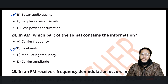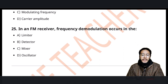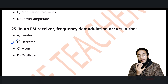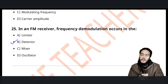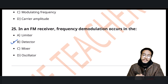In AM, which part of the signal contains the information? The side bands contain the information. Carrier frequency is the frequency of the wave that carries the message signal. Modulating frequency is the frequency of the message signal itself. Carrier amplitude is the amplitude of the wave that carries the message. In an FM receiver, the frequency demodulation detector is the last stage — it identifies the incoming wave and extracts the original audio signal.